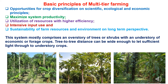Basic principles of multi-tier farming: there will be opportunities for crop diversification on scientific, ecological and economic principles, because of the adoption of crops having different heights, different tiers, different root patterns, growth durations and different output patterns. There will be maximized system productivity because of the combination of various crops, utilization of resources with higher efficiency, and intensive input usage, because whatever resources are available are used for all crop combinations. There will also be sustainability of farm resources and environment on a long-term perspective.